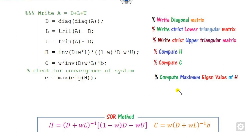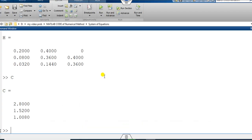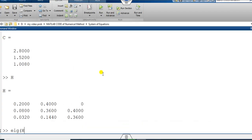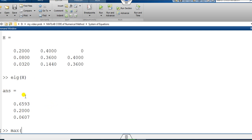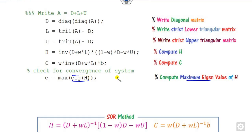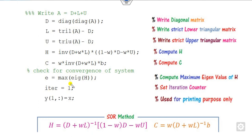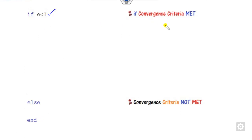For the convergence check, find the eigenvalues of H using eig(H), then find the maximum eigenvalue — this is the spectral radius. Store this as the convergence indicator E. If E is less than 1, the method converges; otherwise, it does not converge and you display an error message.